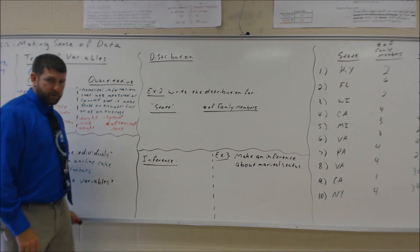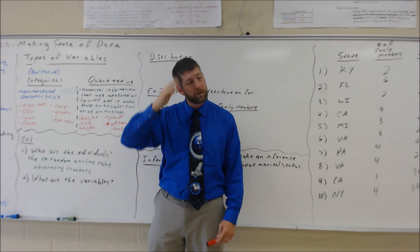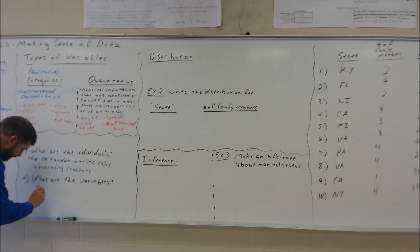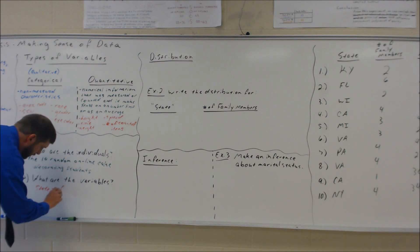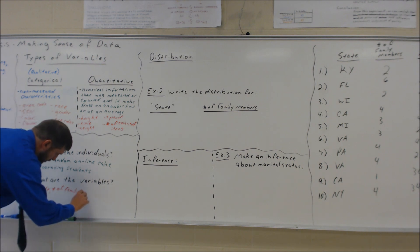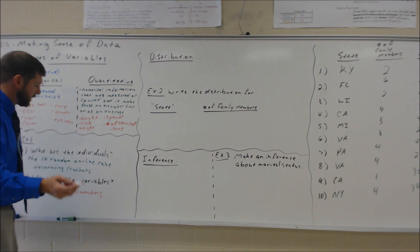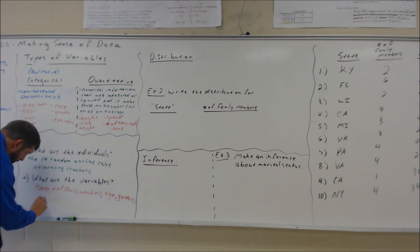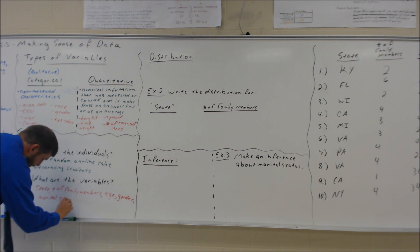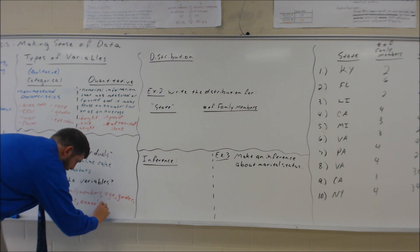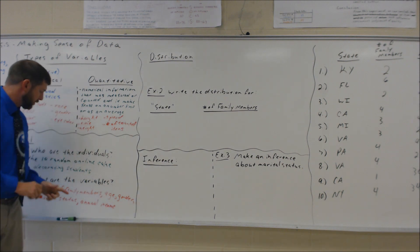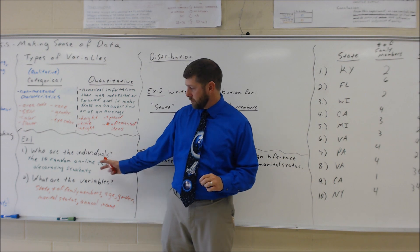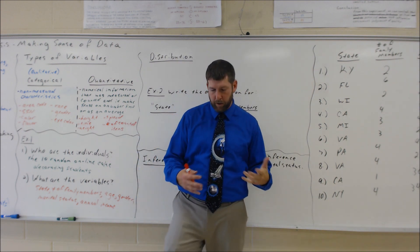So what are the variables — the pieces of information that we gathered about them? You can see that in the data set; it's really just the headings for each column. Our variables would be things like: what state do you live in, number of family members, age, gender, marital status, annual income. These are all the pieces of information we have gathered and learned about these 10 online cake decorating students.